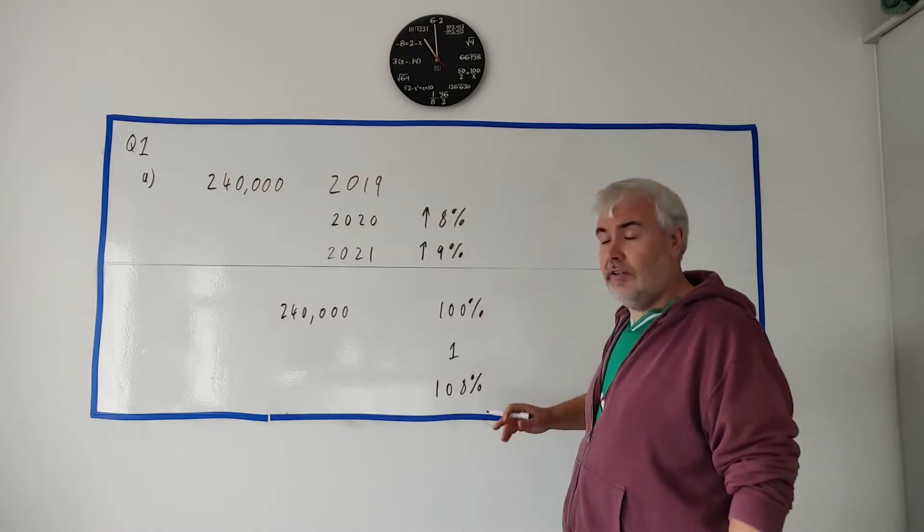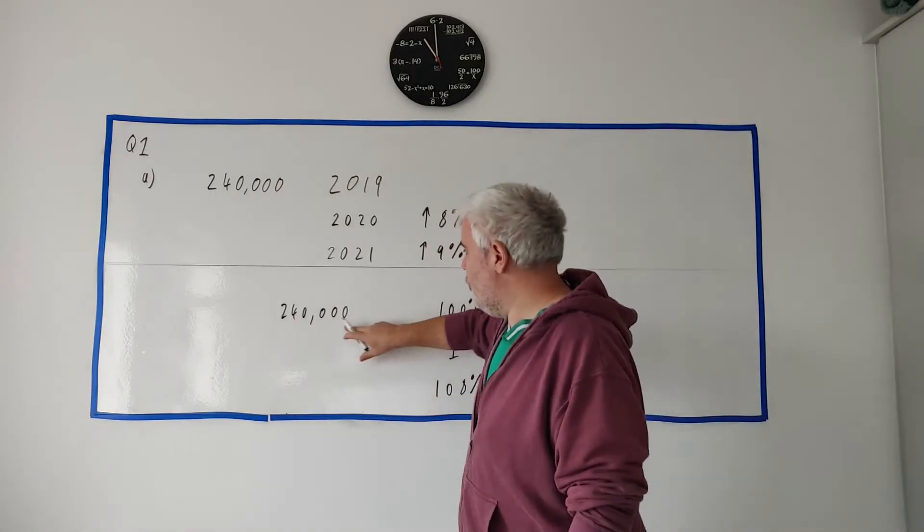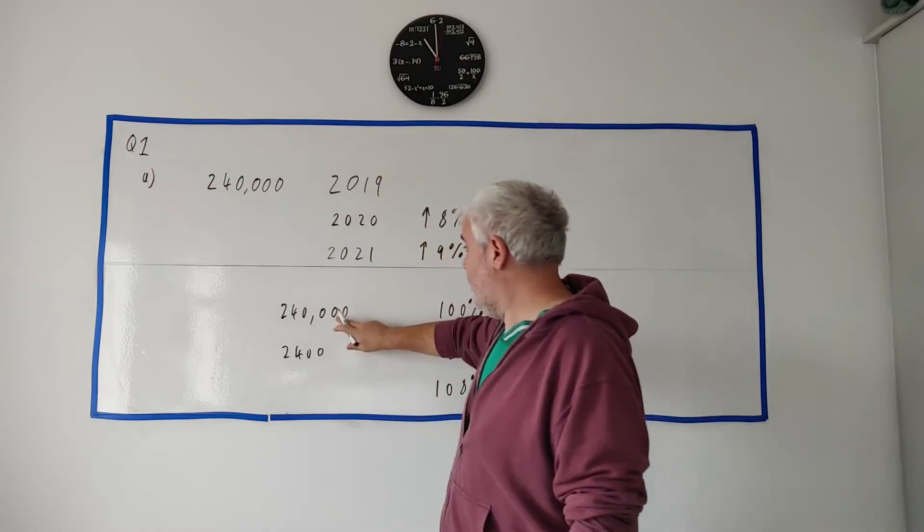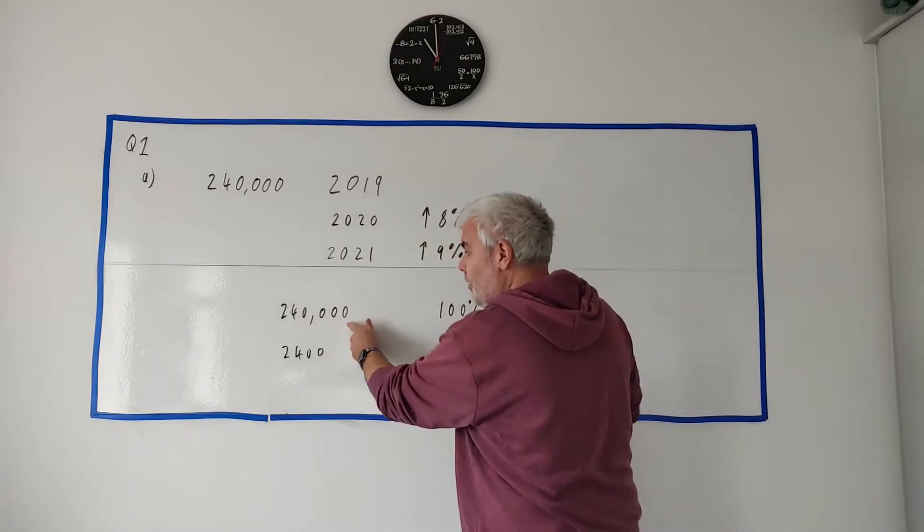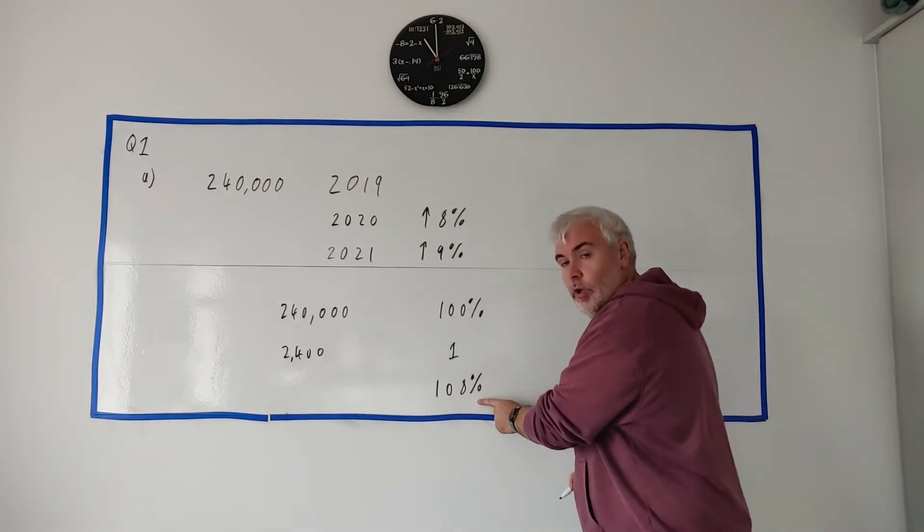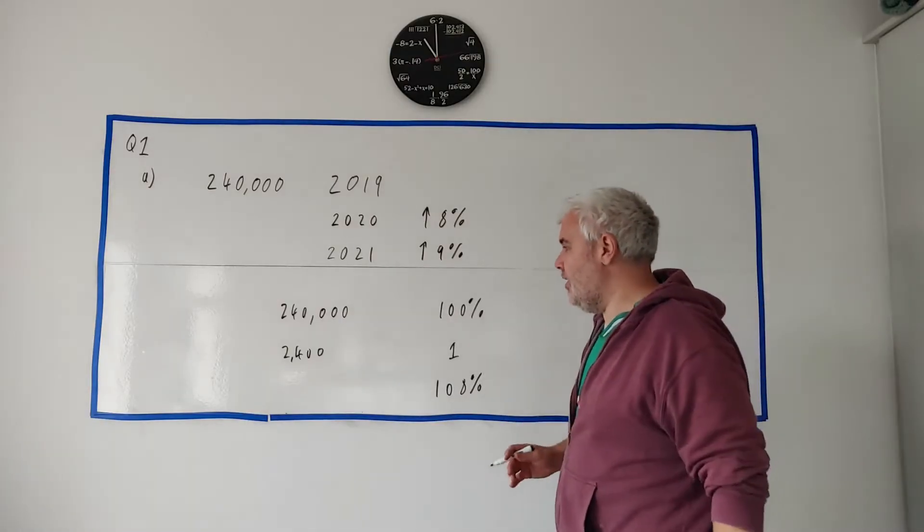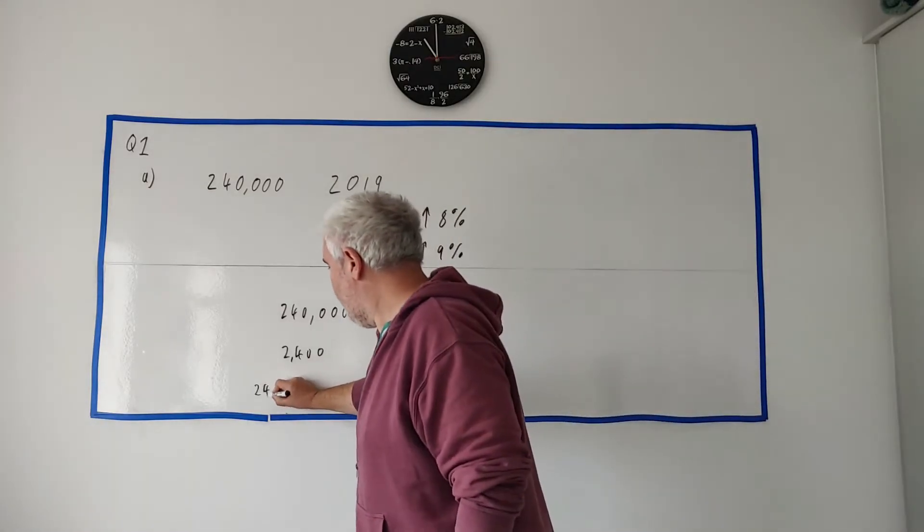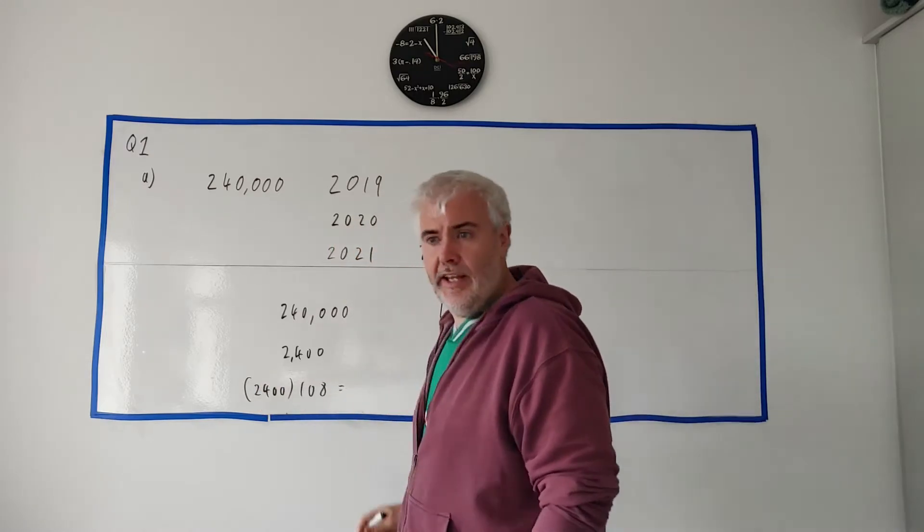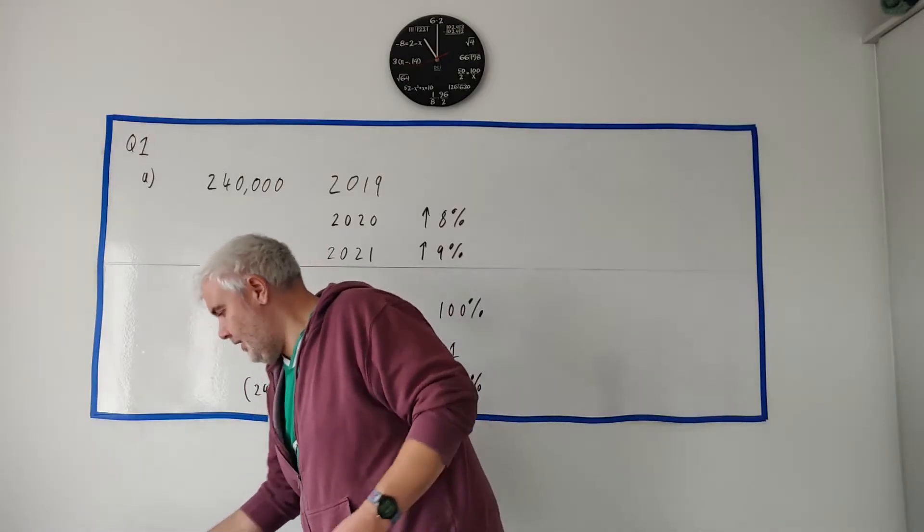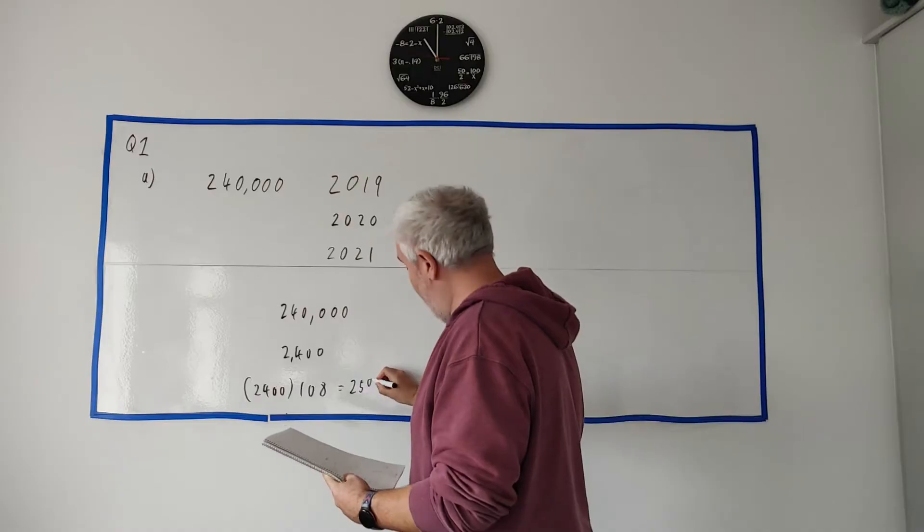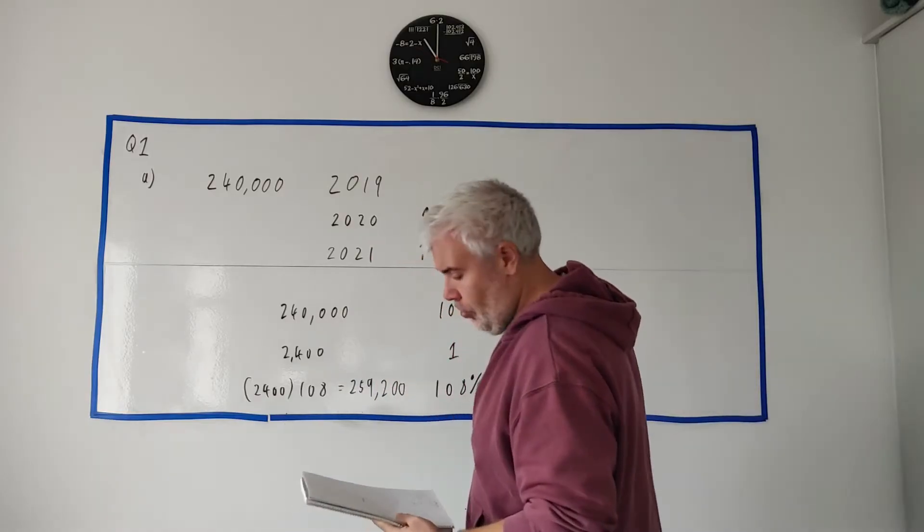To get from 100 to 108 I simply change to 1 first and then change to 108. To get from 100 to 1 divide by 100. So divide this number by 100. Just take two of the zeros off, 2400. To get from 1 to 108 just multiply by 108. So 2,400 multiplied by 108. And a calculator would tell us what that is.